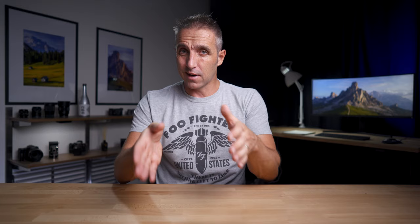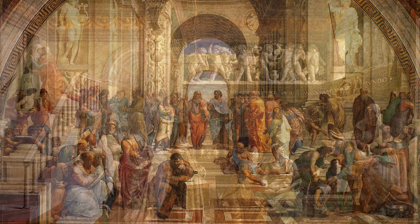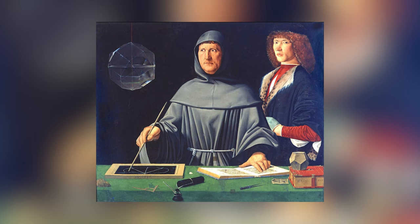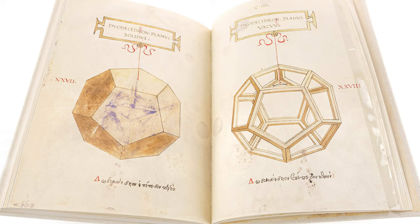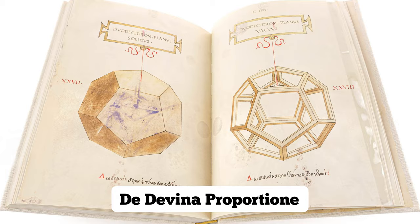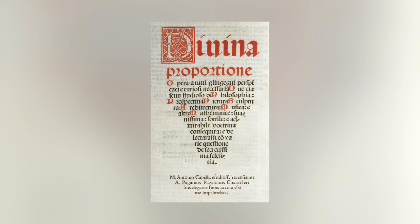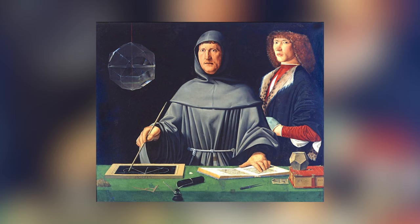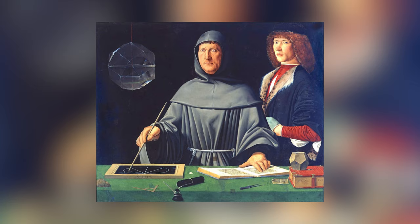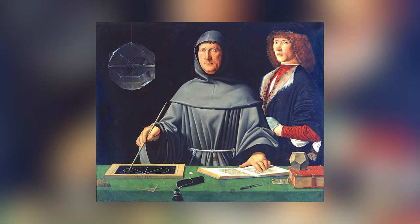From 300 BC right through until around about the 1500s, things were fairly quiet until the Italian Renaissance — this is where the golden ratio started to get its notoriety. Mathematician Luca Pacioli wrote a book called De Divina Proportione, which basically means the divine proportion, and he wrote that in 1509.